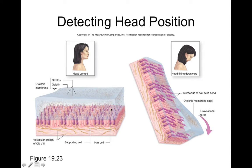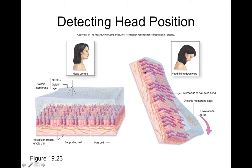At the opening of each semicircular canal, we have the ampulla, which, like the macula, has hair cells embedded within a gelatinous layer that generates action potentials when tilted. When you tilt your head, the endolymph in the semicircular duct moves with gravity, and if there's enough angular acceleration, it pushes on the cupula. The cupula moves with the endolymph, and since hair cells have stereocilia embedded in the cupula, when it bends it generates action potentials that transmit to the brain, making you conscious of your head's acceleration in space.